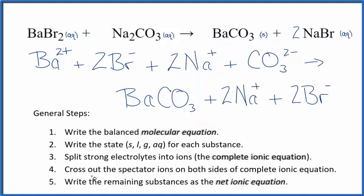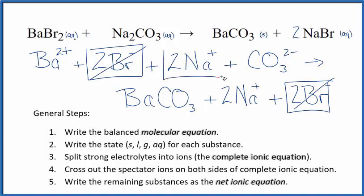At this point, we can cross out the spectator ions. They're on both sides. So in the reactants, I can see two bromide ions and in the products. These are spectator ions. We'll cross these out. Two sodium ions in the reactants and in the products. Spectator ions, we cross those out.